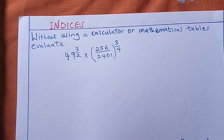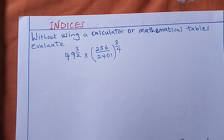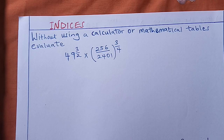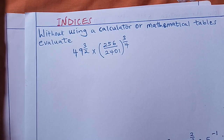The first question reads: without using a calculator or mathematical tables, evaluate 49 raised to 3 over 2, multiplied by the bracket 256 over 2401, close bracket, raised to 3 quarters. That is the question we have.